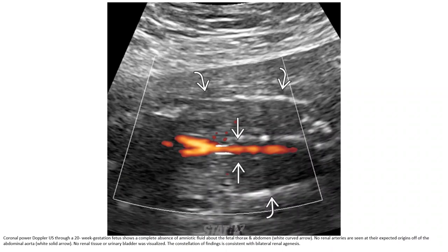Coronal ultrasound in a 20-week gestation fetus showing complete absence of both kidneys. No renal arteries are seen at their expected origin from the abdominal aorta. No renal tissue or renal bladder was identified.